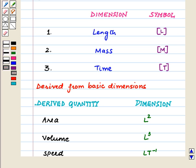There are some quantities which are derived from basic dimensions like area, volume, and speed. The dimension of area is L², the dimension of volume is L³, and the dimension of speed is LT⁻¹.